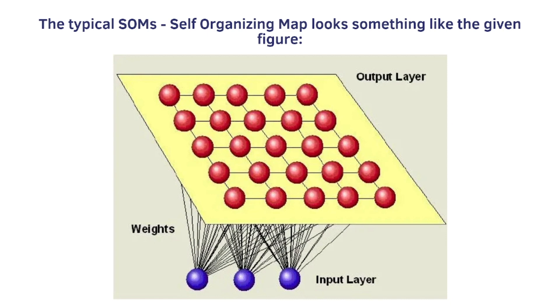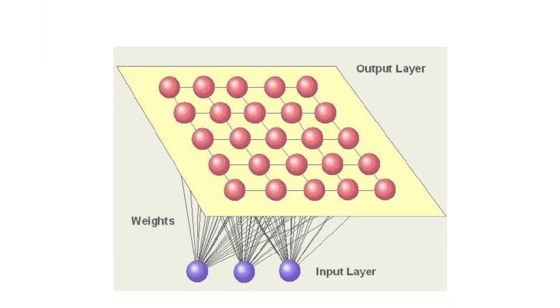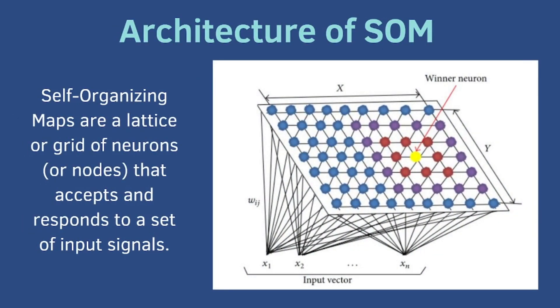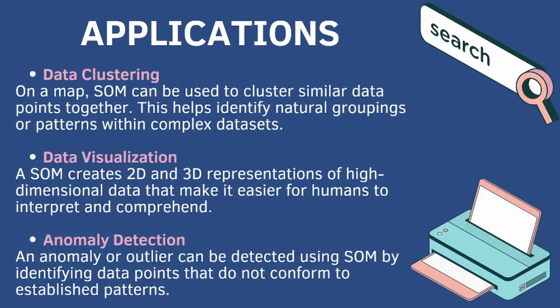Let's understand it with a simple example. Consider you have a garden with various plants and you want to organize them based on their watering needs. A self-organizing map helps you arrange the plants so that those with similar water requirements end up close to each other. As we water plants over time, the map refines itself, creating clusters of plants with similar needs for efficient gardening. Its applications include data clustering, data visualization, and anomaly detection.